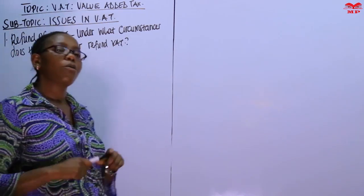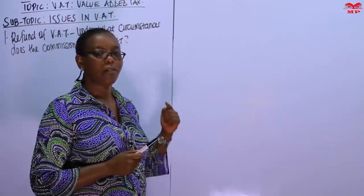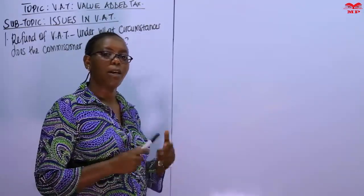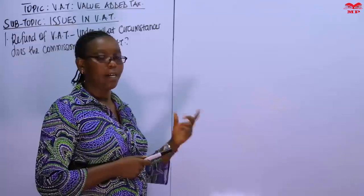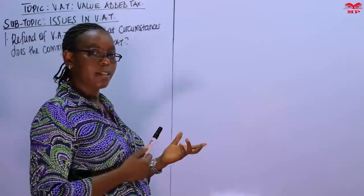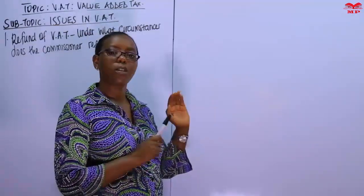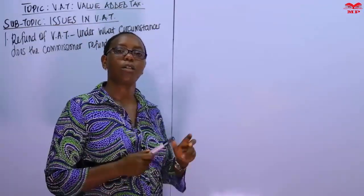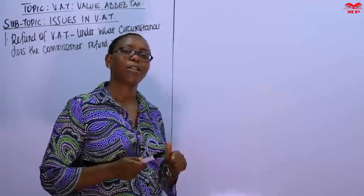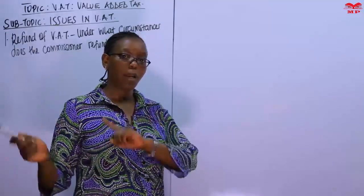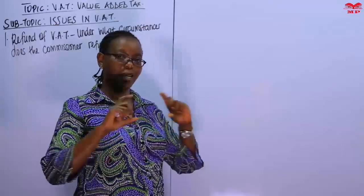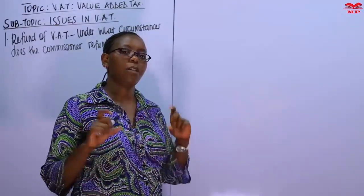Remember that a taxpayer will pay VAT because they are appointed by KRA — by the commissioner — to collect VAT on behalf of KRA. So the taxpayer collects VAT on their sales, what we call output VAT, and then deducts the VAT paid over to suppliers — the input VAT. That excess is the VAT payable.